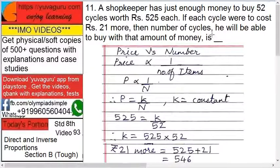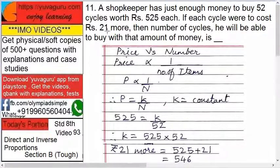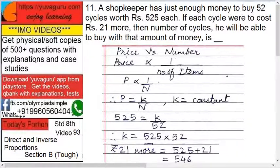The problem is very simple. I have just enough money to buy 52 cycles, each cycle costing 525 rupees. If the cost of the cycle is 21 rupees more, meaning 525 plus 21, then the number of cycles he can buy is what we have to find. This is a price versus numbers problem.